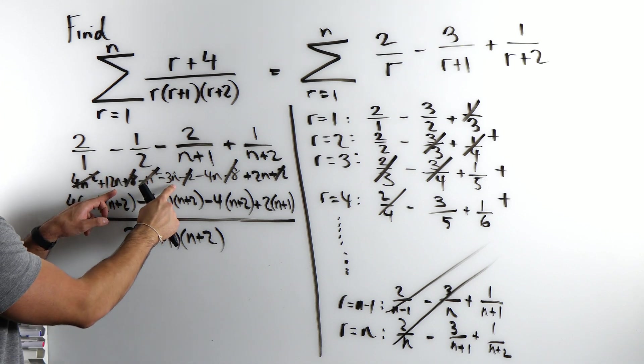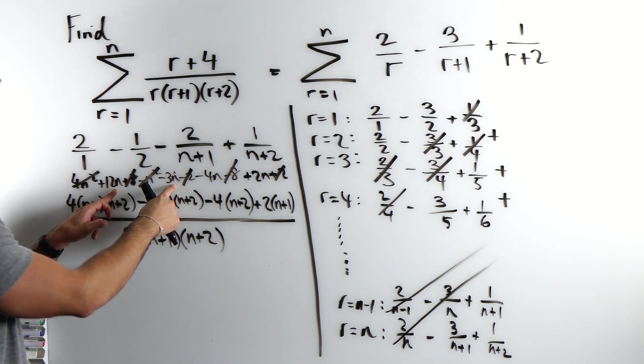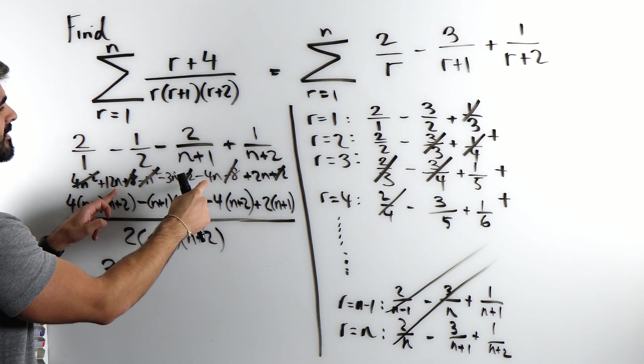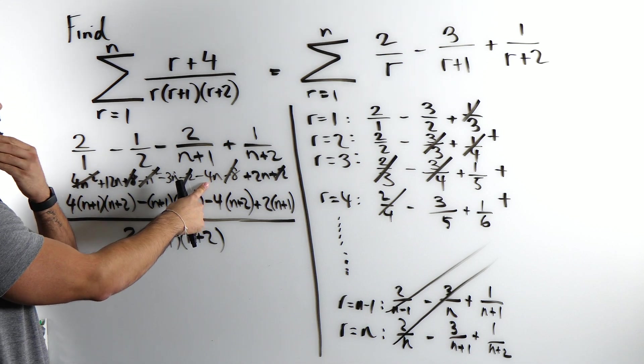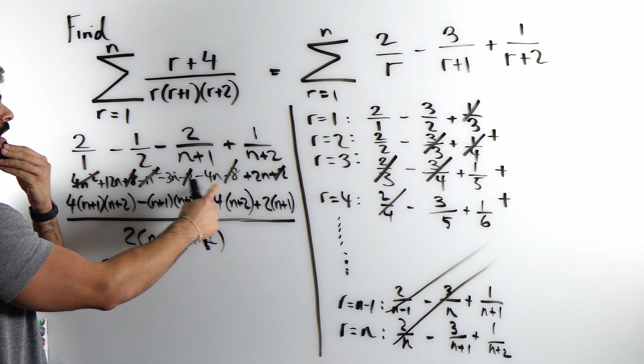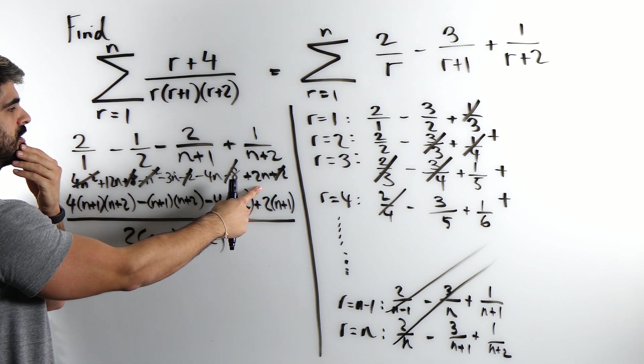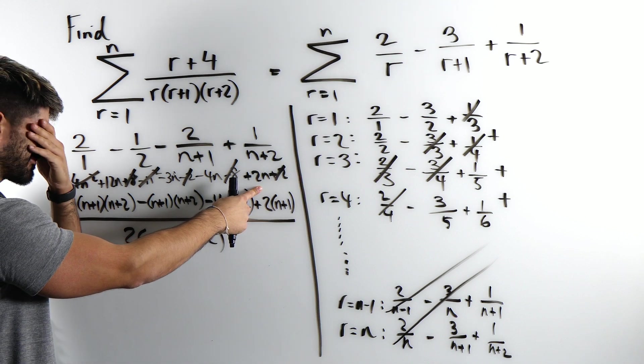12 minus 3 is 9. 9 minus 4, 5. 5 plus 2, 7.